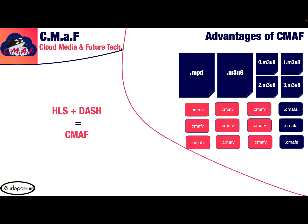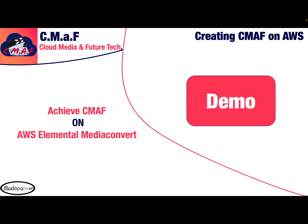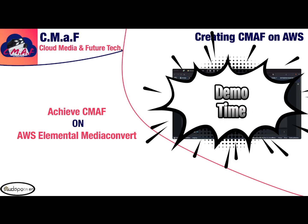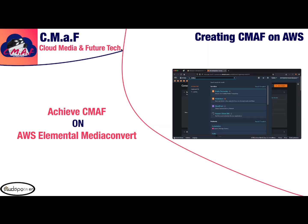That said, CMAF seems very promising and solves many problems, but in reality there are other concerns from transcoding to distribution. So let me take you through the transcoding profile. I will transcode content using AWS Elemental MediaConvert in a demo, which will produce a CMAF version of a VOD content. I will also post a video showing how to get CMAF using AWS Elemental Media Live, which is the live version of CMAF.